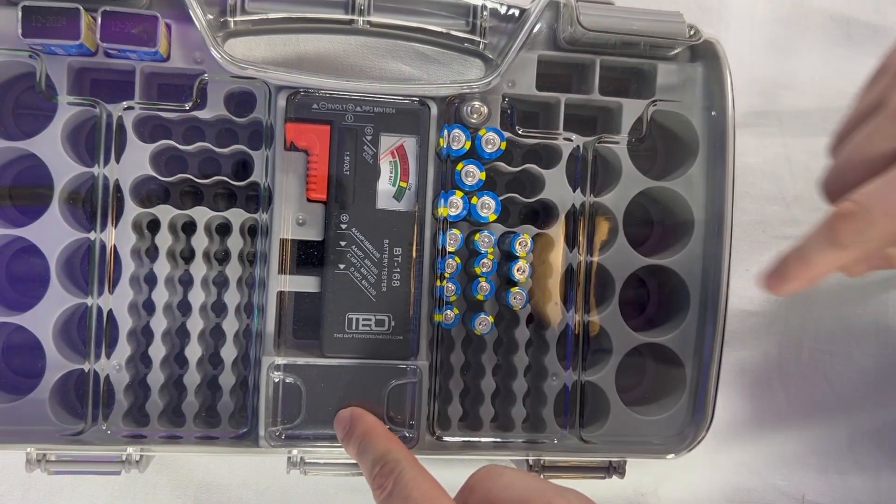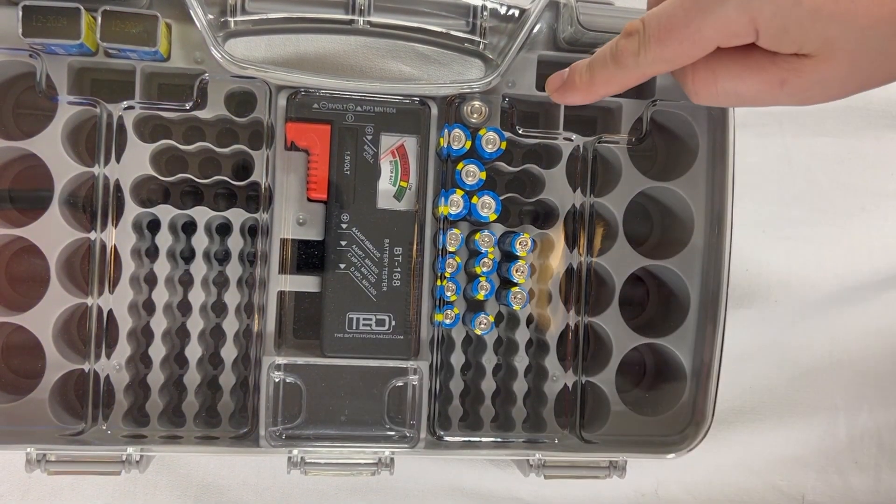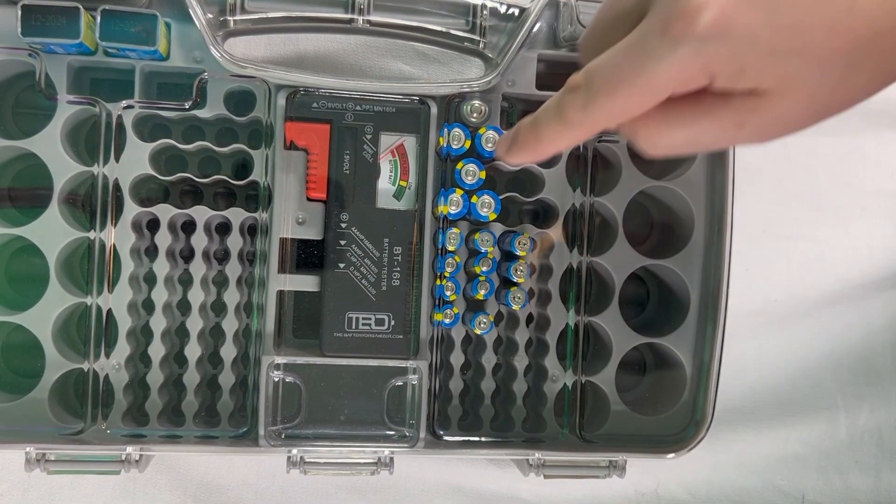Look at this. It includes a battery tester. There's a spot right there for extra button batteries. You got nine volts, D's, C's, AA's, AAA's in there.